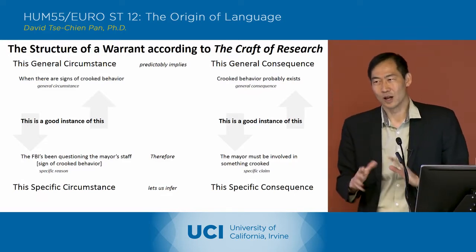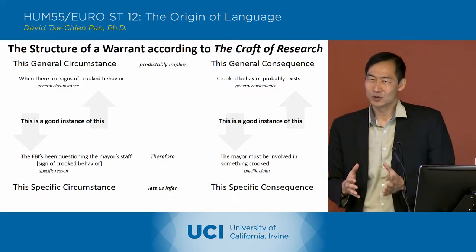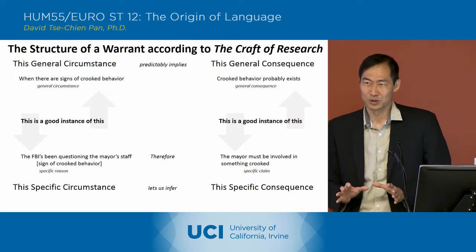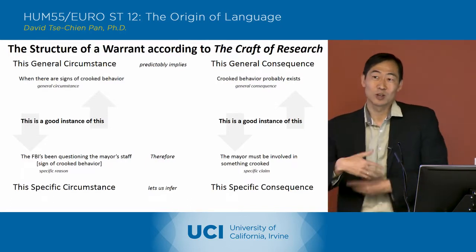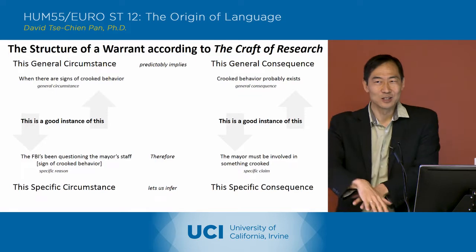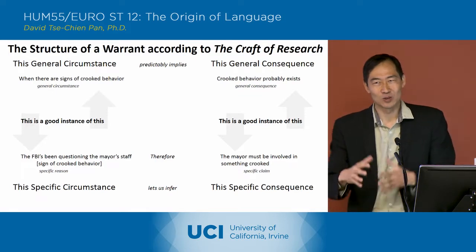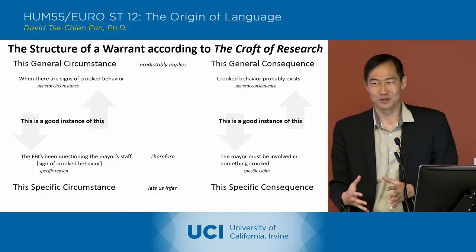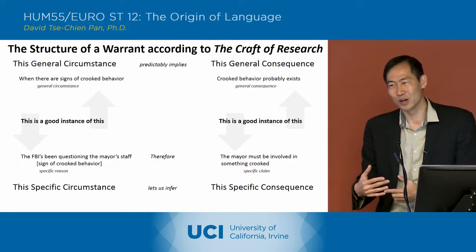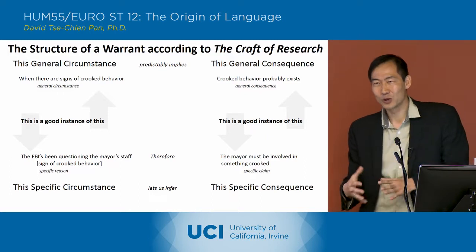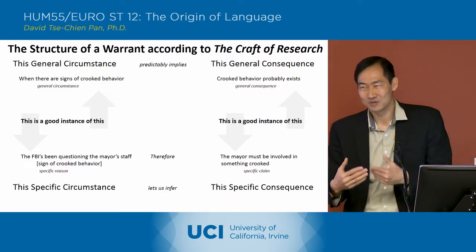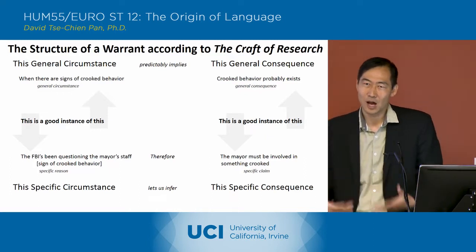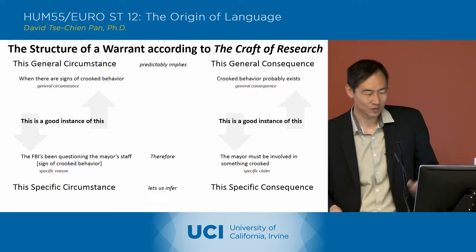Unfortunately, I don't think they're right about this. I think they've got it all screwed up. So we're going to redo the diagram in a different way, the way I think it makes more sense. And then we're going to go through a third example of the diagram, but using Hobbes as an example.